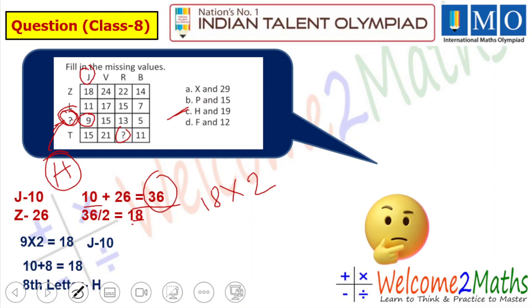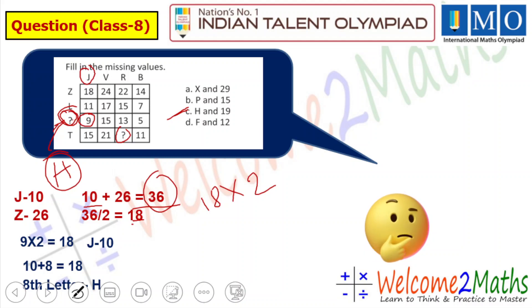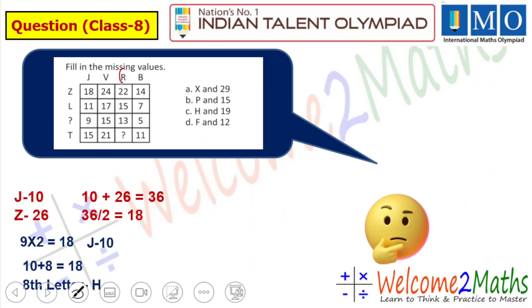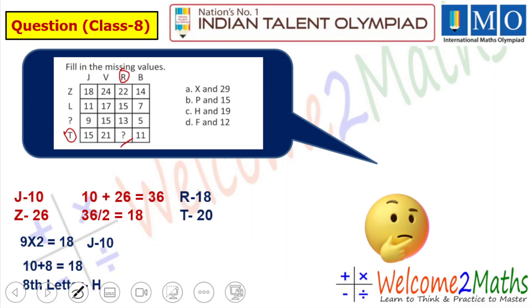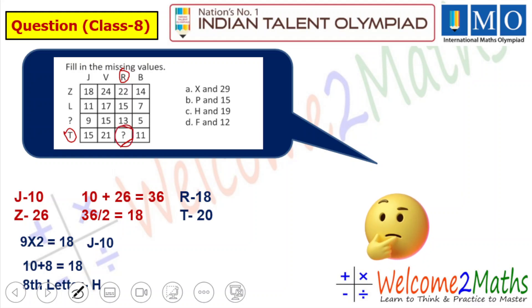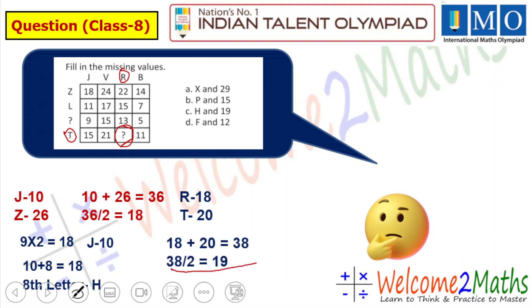We have to find out the next part also. As I already told you, whenever you have option-based questions you can easily find out the answer. Here you can see it is R and T. R is the 18th letter and T is the 20th letter in the English alphabet. At first we add and then divide by 2: 18 plus 20 equals 38, and 38 divided by 2 equals 19.